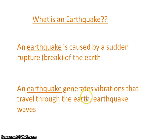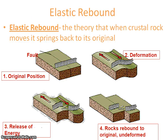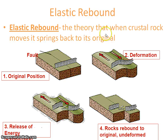An earthquake generates vibrations that may be horizontal or vertical. Next, we come to the main theory of earthquake — it is the elastic rebound theory. The theory states that when a crustal rock moves, it springs back to its original position.